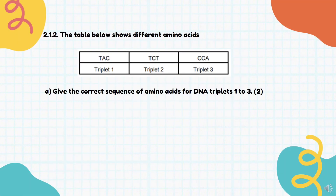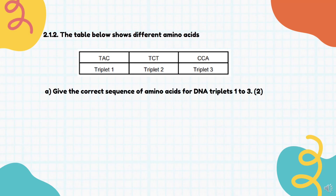The table shows different amino acids and we need to give the correct sequence for DNA triplets one, two, and three. We find the complementary bases. For TAC, DNA triplet one will be ATG — adenine, thymine, guanine. Triplet two will be AGA. Triplet three will be GGT. It would be different if they asked for mRNA or tRNA — for example, it would be AUG instead of ATG, because RNA uses uracil instead of thymine.